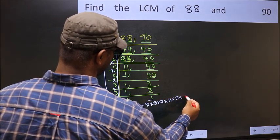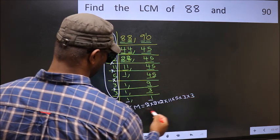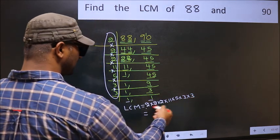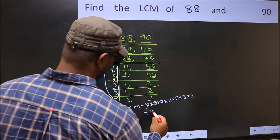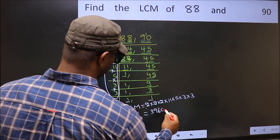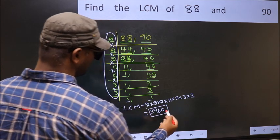...times 5 times 3 times 3. When we multiply these numbers, we get 3960 as our LCM.